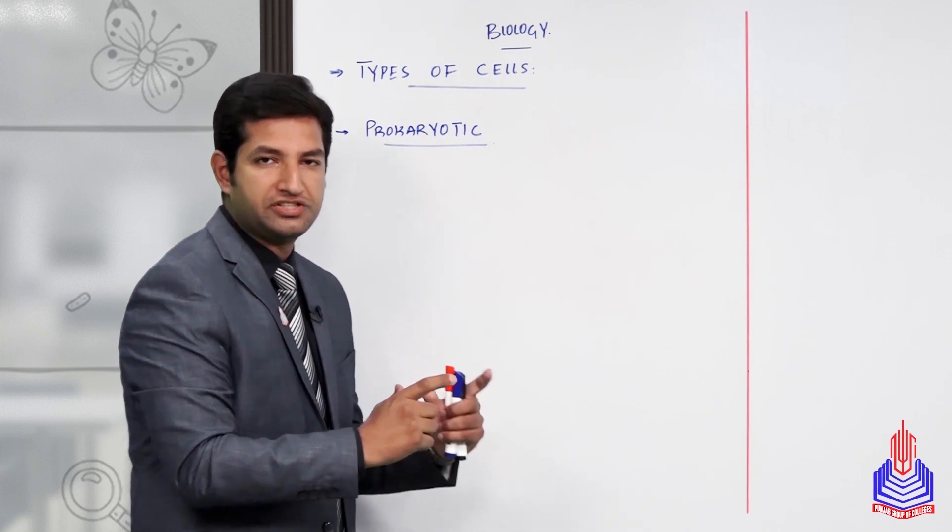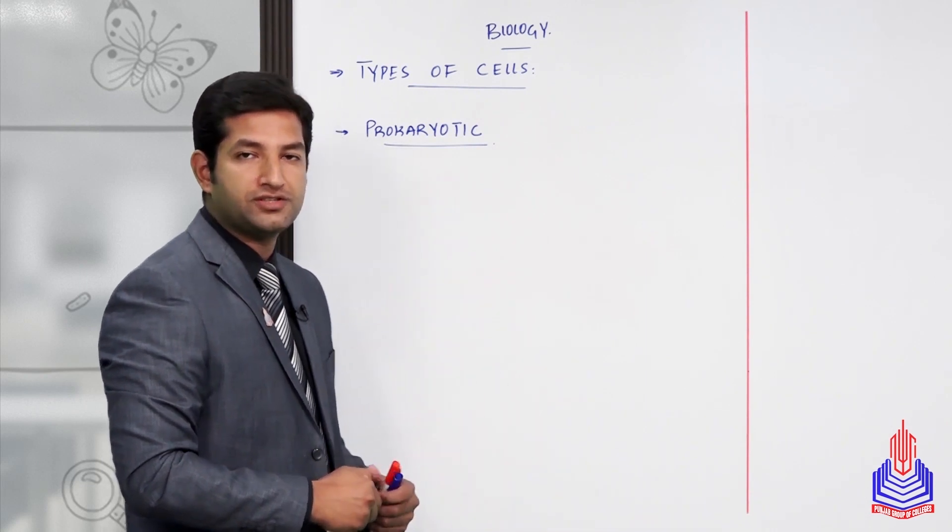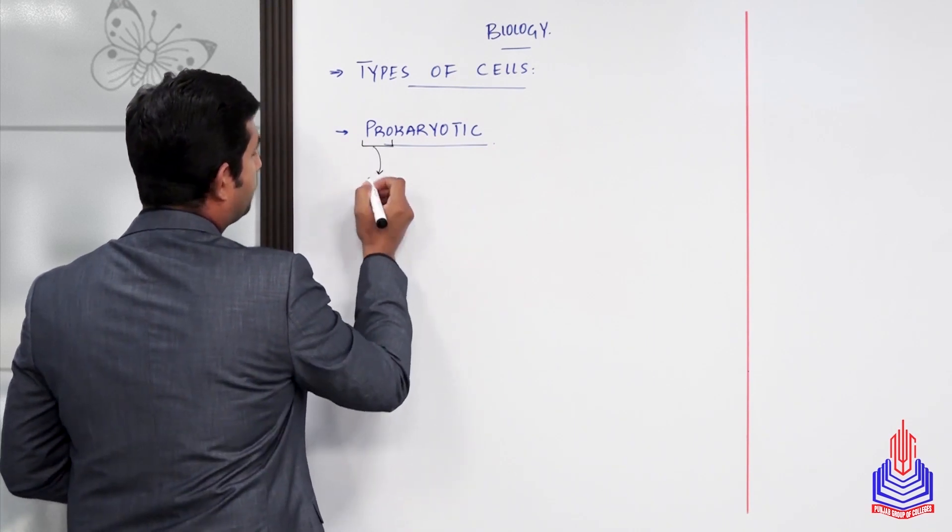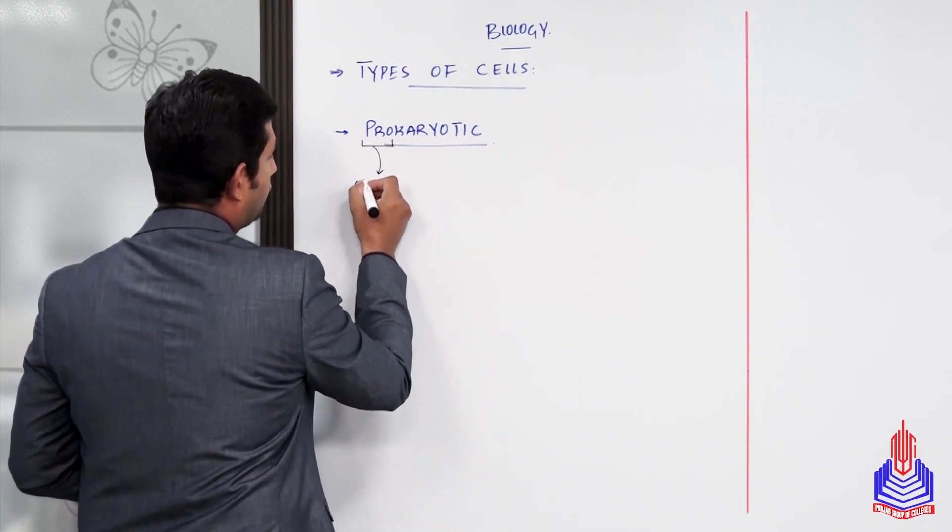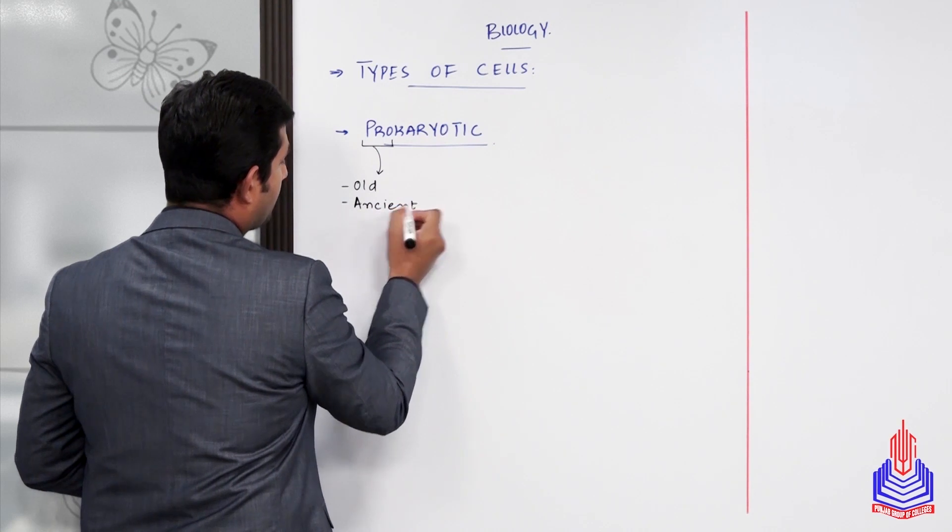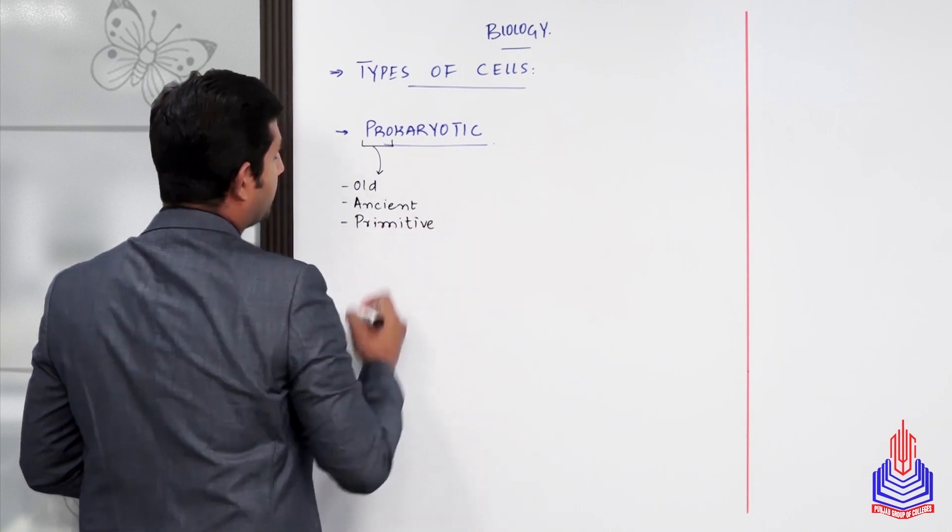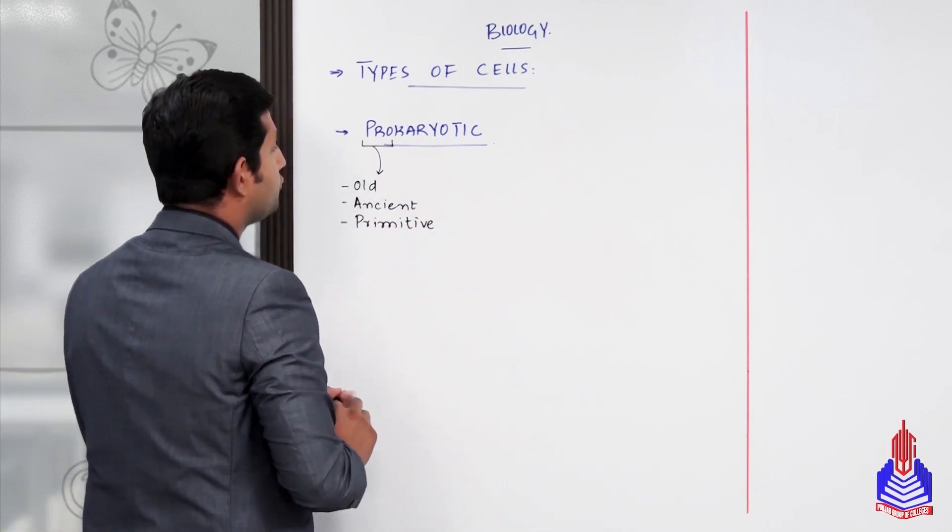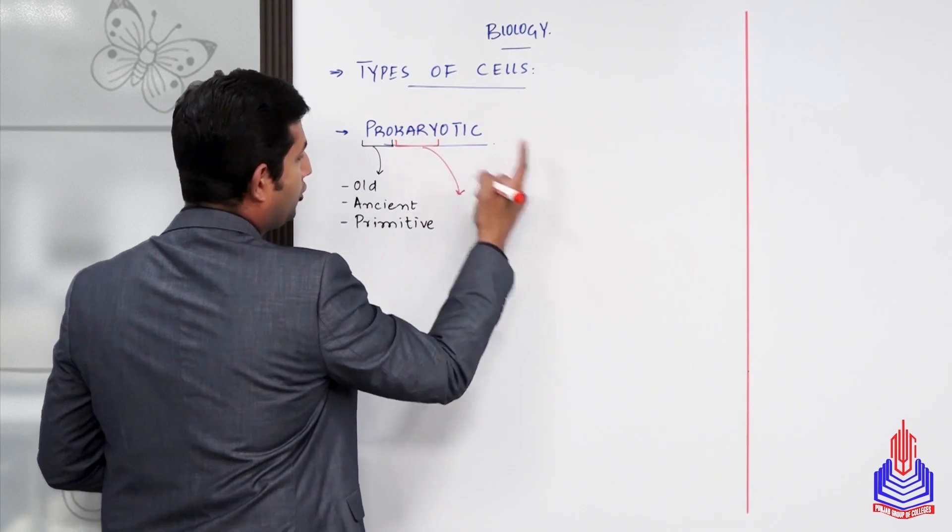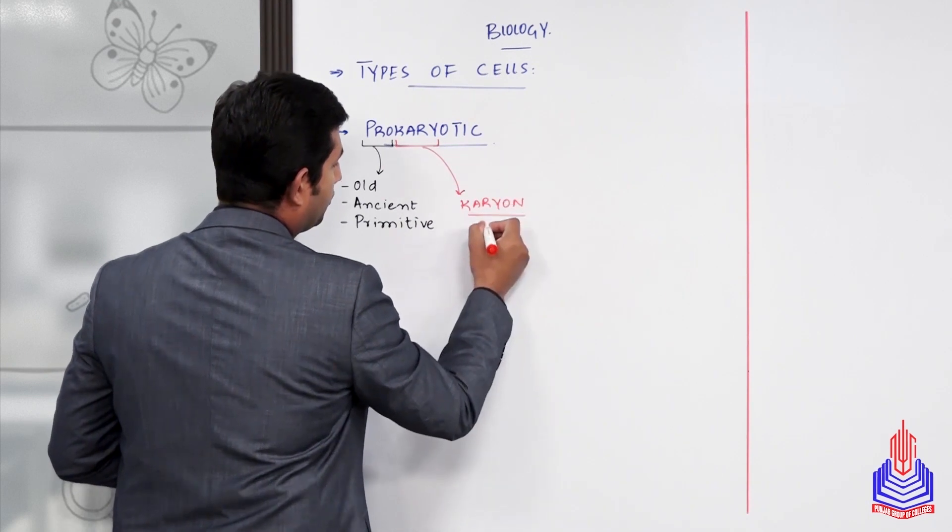First, I'll explain the prokaryotic cell - what prokaryotic means and its further divisions. The word prokaryotic is derived from 'pro', meaning old or ancient or primitive. The technical basis for differentiation is the 'karyo' part, derived from karyon, which means nucleus.